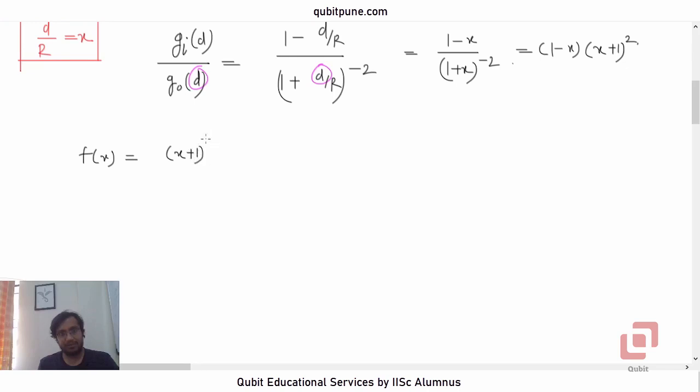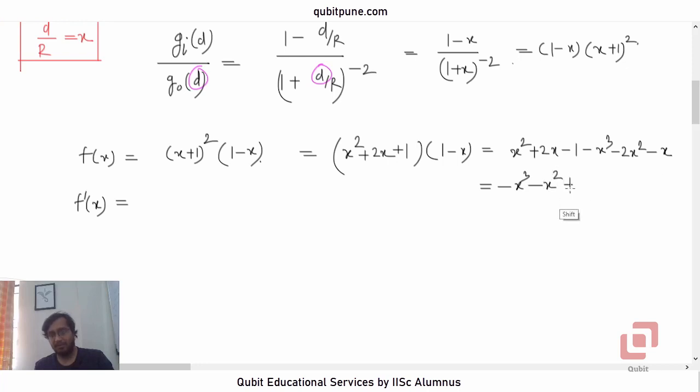First thing that we are going to do is find the derivative of this function. Let us simplify this. X plus 1 squared, so its expansion will be X squared plus 2X plus 1 into 1 minus X. So it will be X squared plus 2X minus 1 minus X cubed minus 2X squared minus X. So it will be negative X cubed minus X squared plus X minus 1.